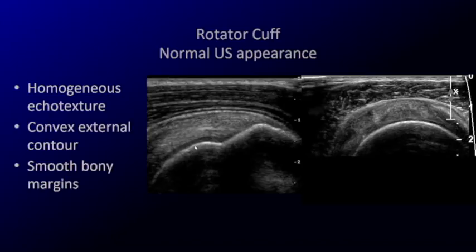There are two other layers you may see. One is the articular cartilage, which is typically anechoic, and a potential space between the deltoid and the rotator cuff — that is the subacromial subdeltoid bursa. You won't always see that unless it is distended with fluid or thickened. So: skin or subcutaneous fat, deltoid, rotator cuff, humeral head — four layers.